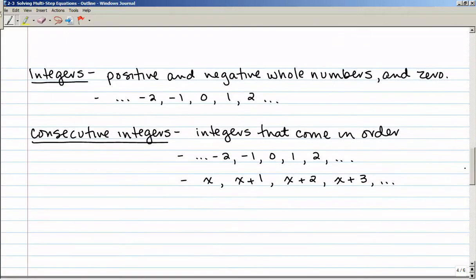So another type of problem that you might run into when you're solving multi-step equations are consecutive integers problems. So let's talk about what some of these terms mean. Integers are basically the positive and negative whole numbers and 0. So we have all of the negative numbers, negative 2, negative 1, 0, 1, 2, and then all of the positive numbers. Those are integers. Notice there's no fractions and there's no decimals.